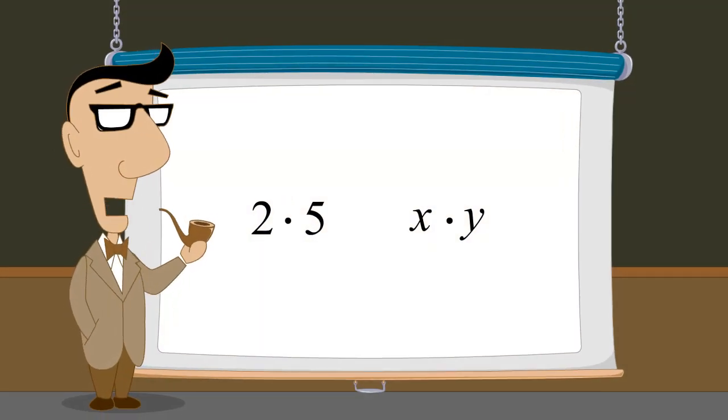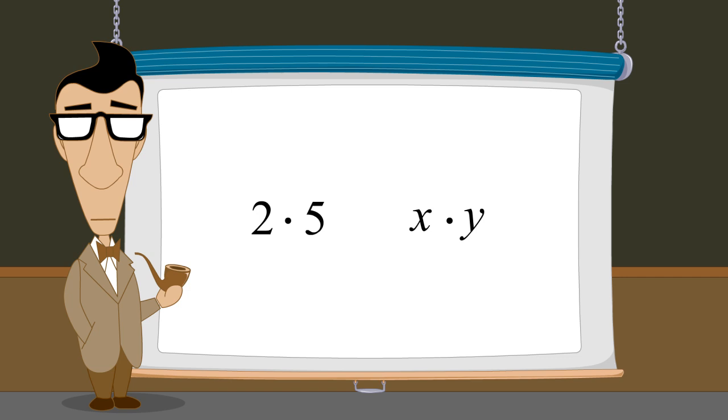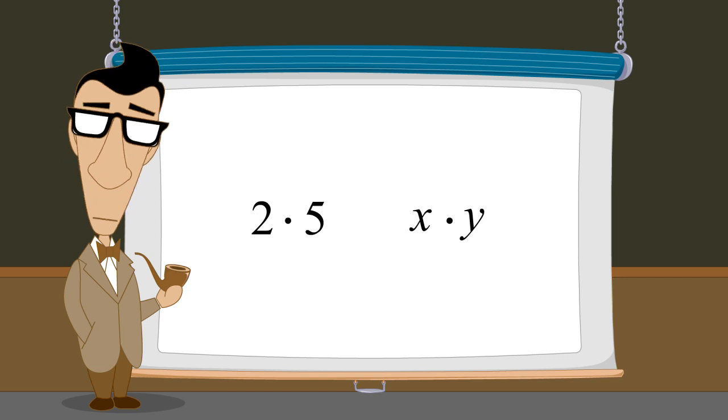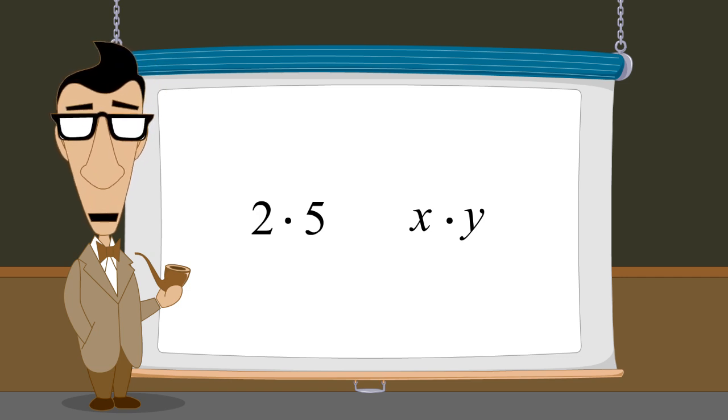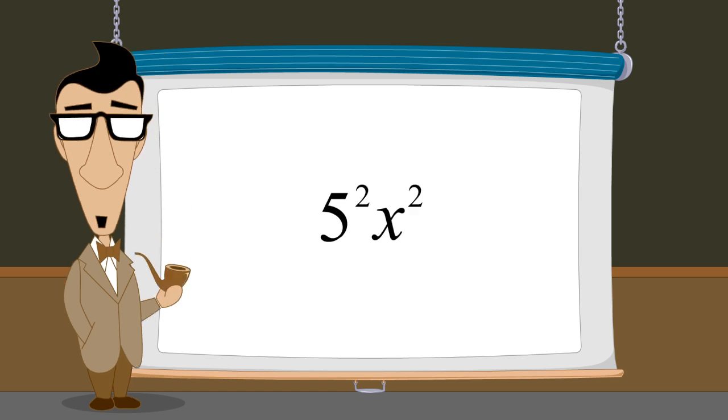When using variables, we have one additional option for indicating that two variables are multiplied. We can write the variables next to each other, with nothing in between. We can also use this notation when multiplying a variable and a number. We can also do this when these terms have exponents.